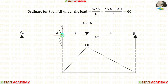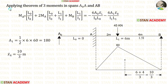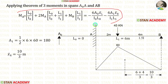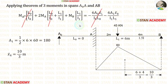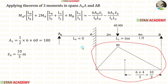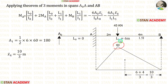Since span A0A is imaginary, we should not make any ordinates in this span. Now let us apply the theorem of three moments in spans A0A and AB. In this equation, the TAM terms will be 0 because A0A is an imaginary span, so we only have to calculate A1 and x-bar right. This is a triangle; the area formula is half times breadth times height. The height is 60 and the breadth is 6, giving area A1 = 180.